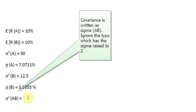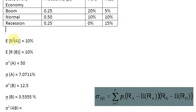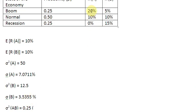Now we can use this information to find out the covariance between asset A and B. We start with the first probability, 0.25. Inside a bracket, I write the actual return of asset A during the boom phase, which is 20%, and from this I subtract the expected return on asset A, which is 10%.